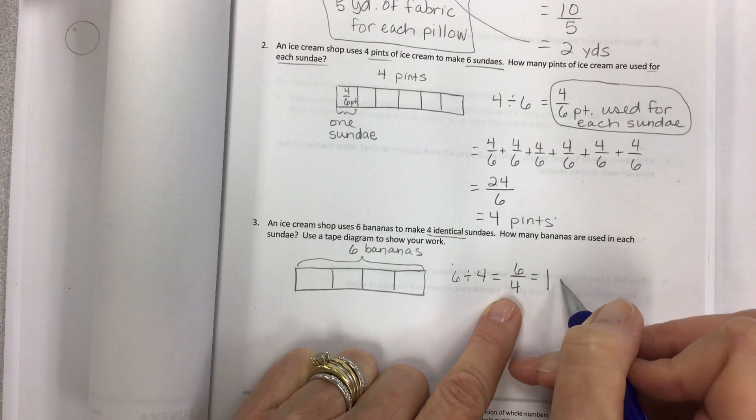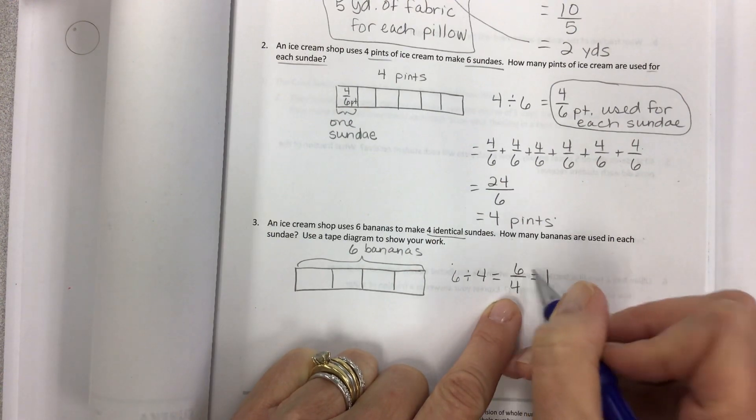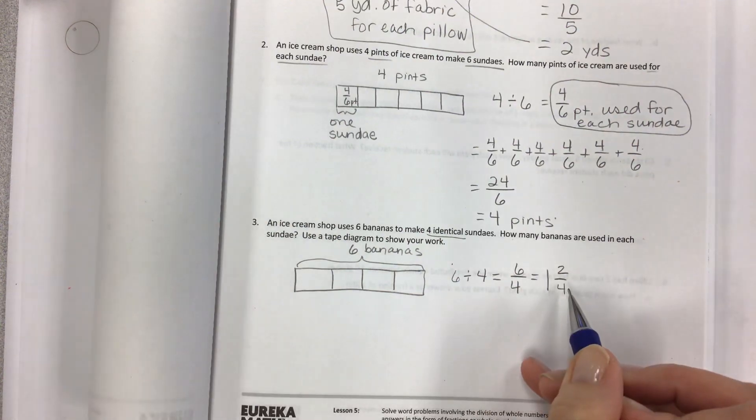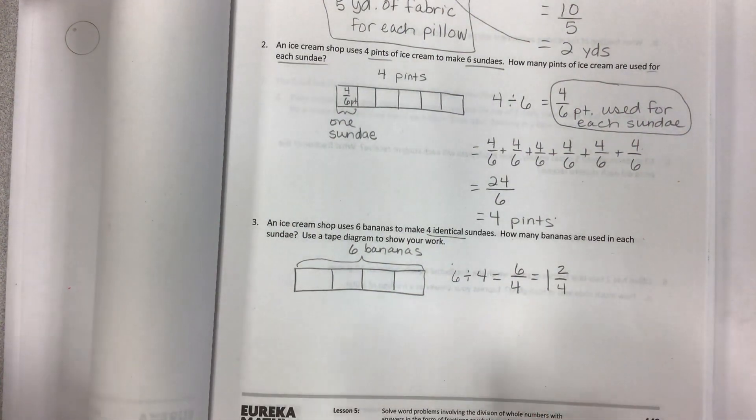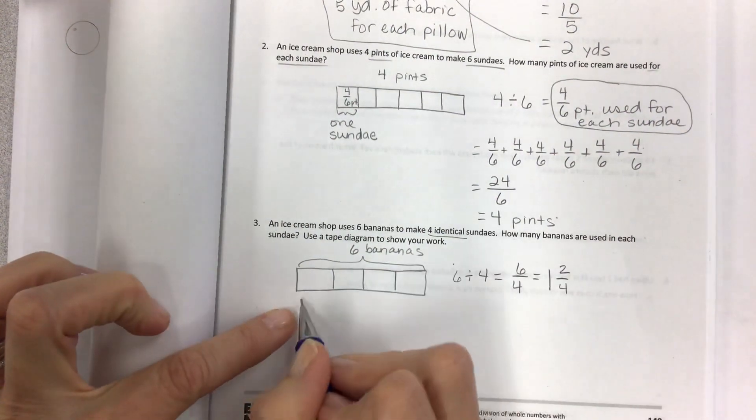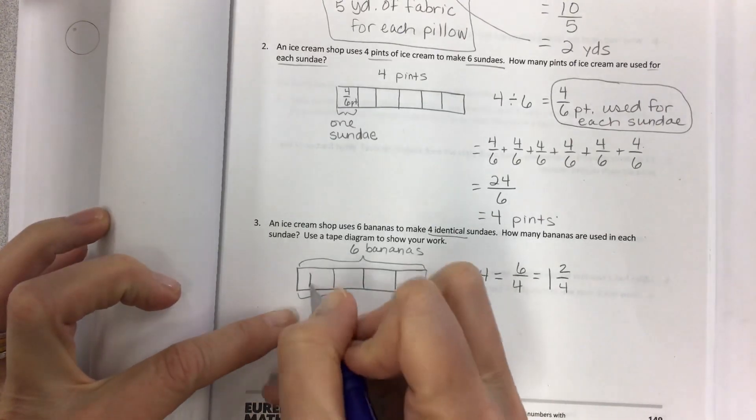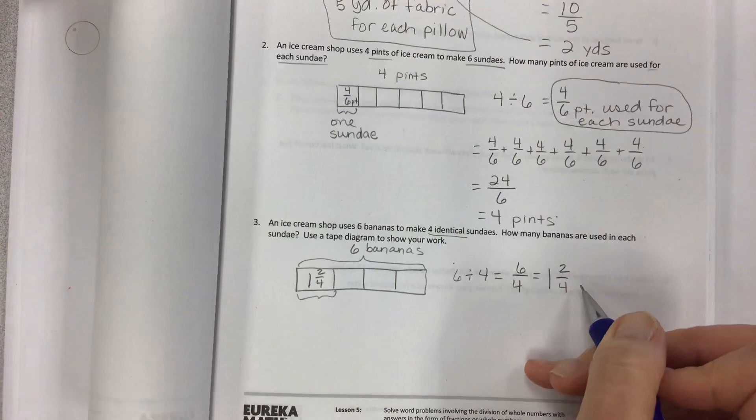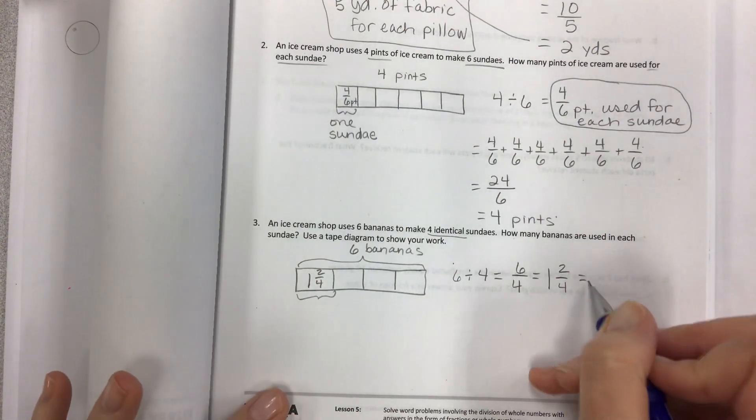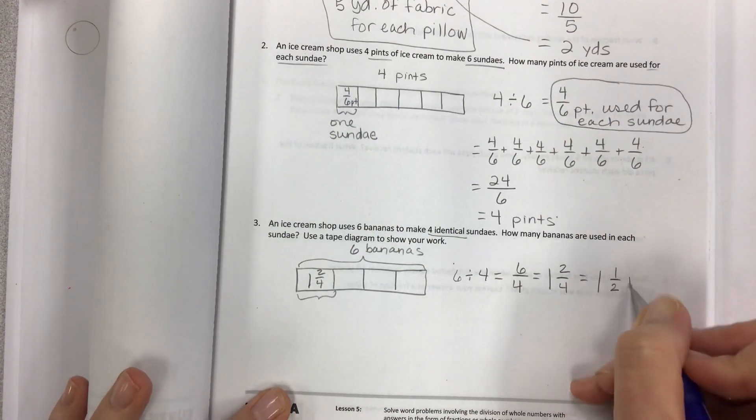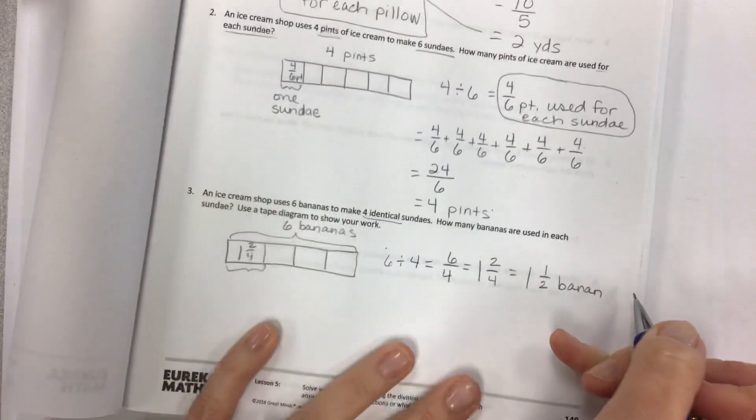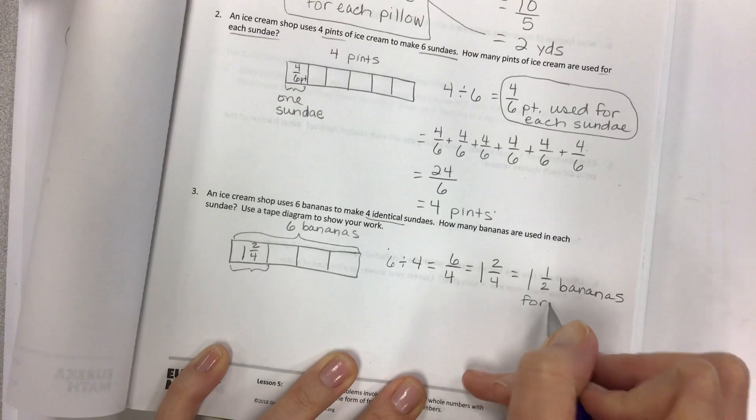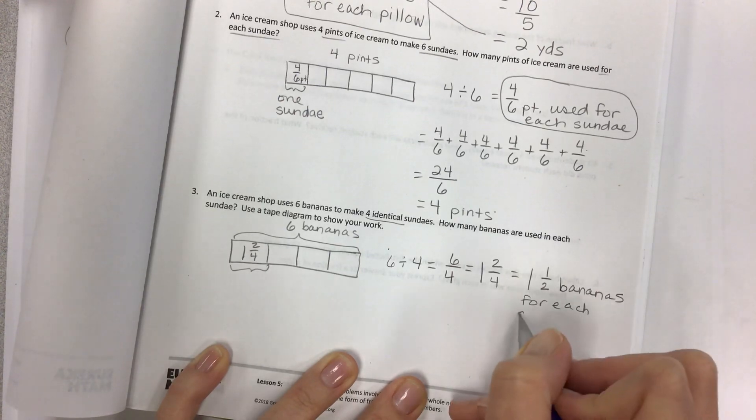I won't leave it like that. I will finish this off as a mixed number. Four fits into six one time, but there are two fourths left over. So for each sundae, I have 1 and 2/4, which you know is also equal to 1 and a half bananas.